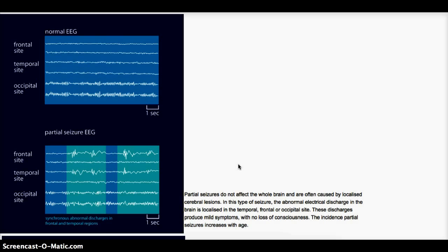Partial is localized to one hemisphere, whereas generalized will have spikes in both hemispheres. So let's look at generalized seizures EEG now.